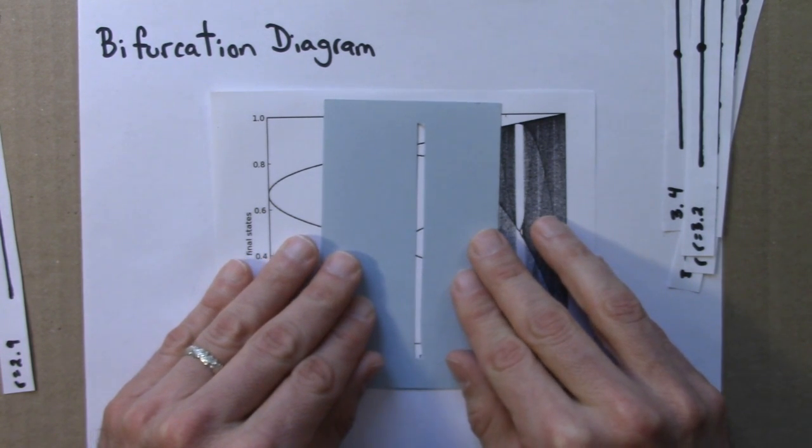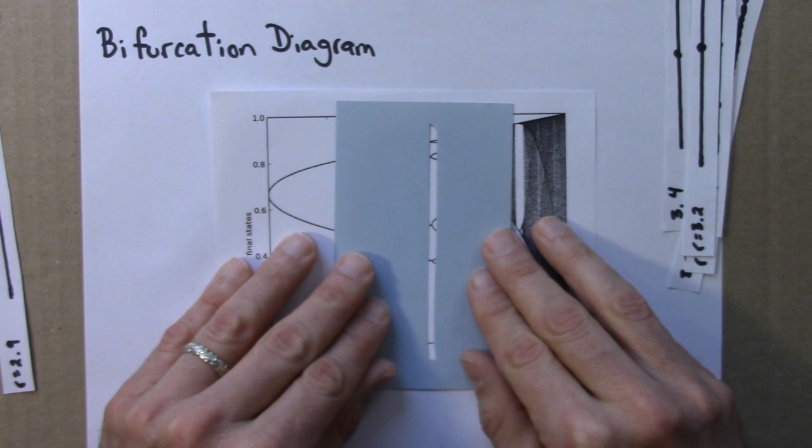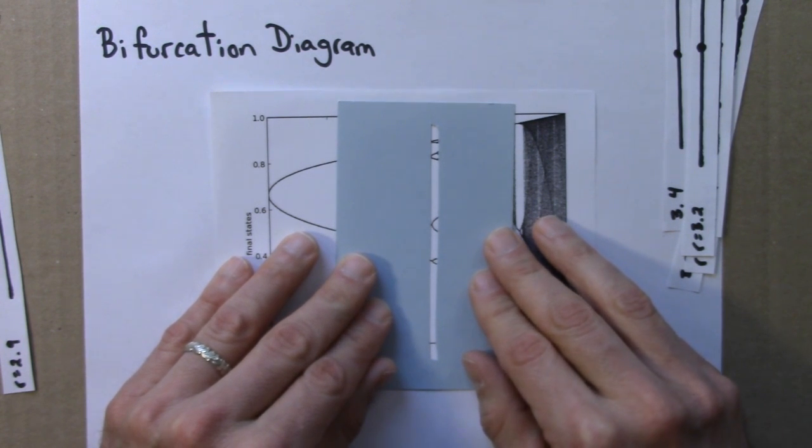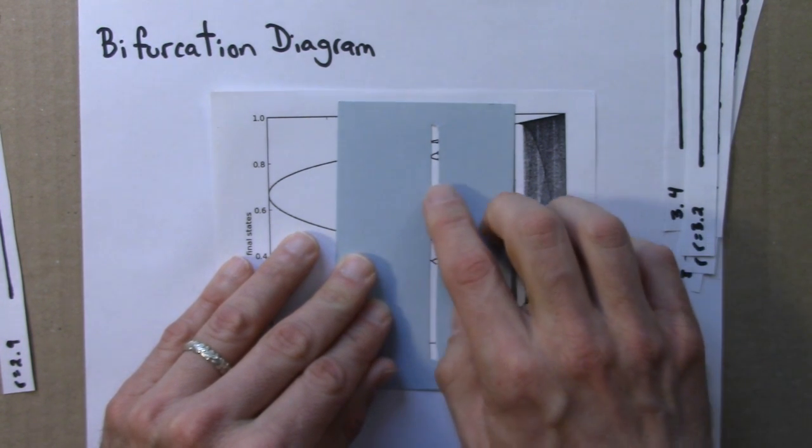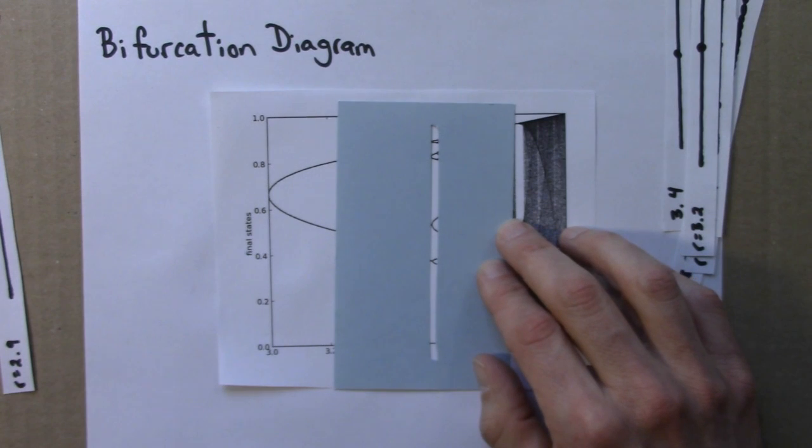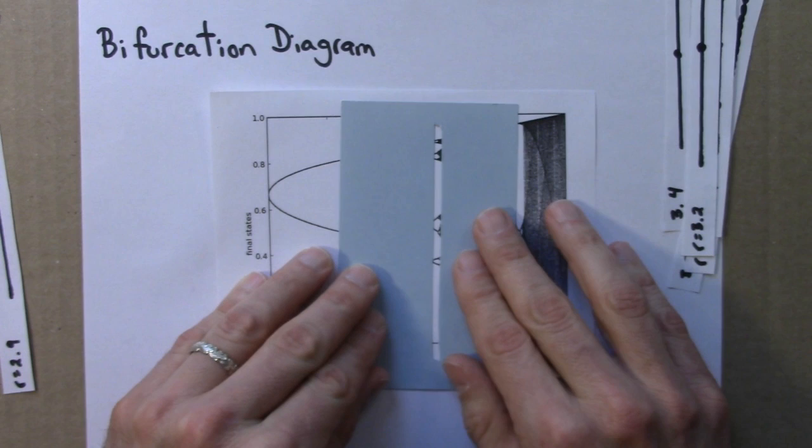And then as I increase R further still, there's a region of period 8: one, two, three, four, five, six, seven, eight. Each period splits into 2. So 4 goes to 8, 8 goes to 16, and so on.